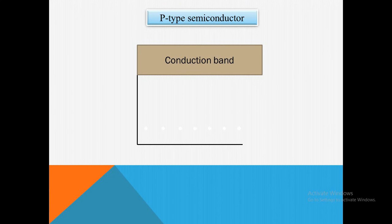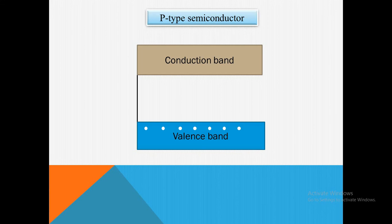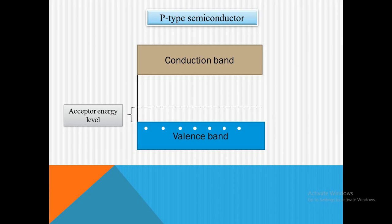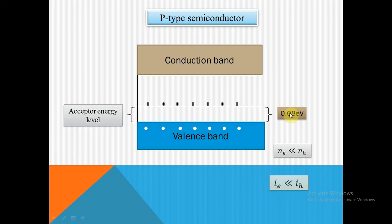In the case of a semiconductor, there is a conduction band and a valence band. When we add a trivalent impurity, just above the valence band another energy level is formed, which is known as the acceptor energy level. The energy gap between the valence band and the acceptor energy level is 0.08 electron volt. By providing this energy, we can make electrons move from the valence band to the acceptor energy level. The conductivity in P-type is due to holes, and maximum current is due to holes rather than electrons. The number density of holes is greater than that of electrons.